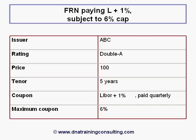In essence, the investor is receiving a 1% higher spread than under a regular FRN, but is taking the risk of being capped at 6% during any period in which 3-month LIBOR resets above 5%.